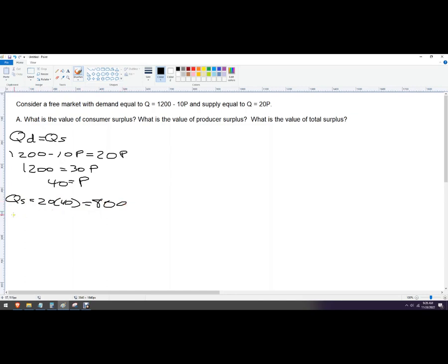And 800 units is the equilibrium quantity. We can do this on the demand side too, just to prove it to you. 1200 minus 10 times 40, so that's 400, that's also 800. See, 800 equals 800. So that's how we know we're at equilibrium.